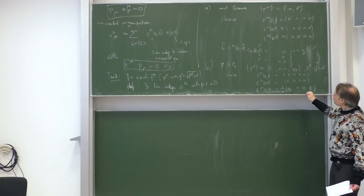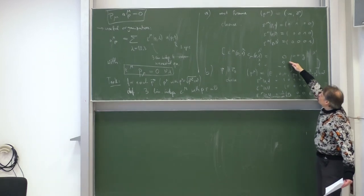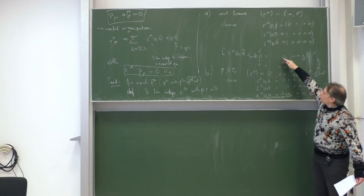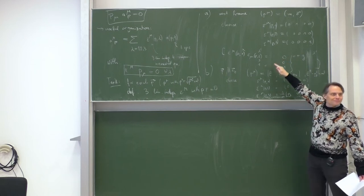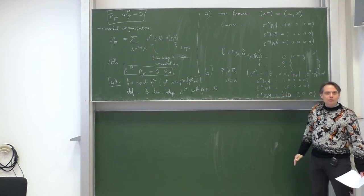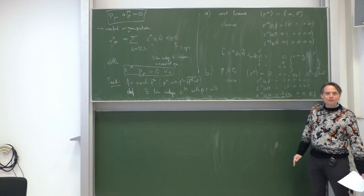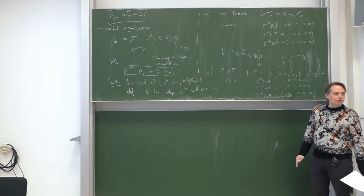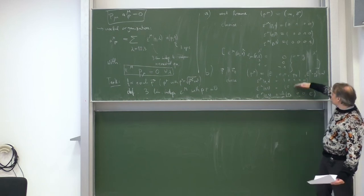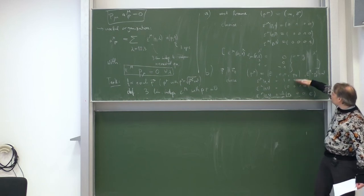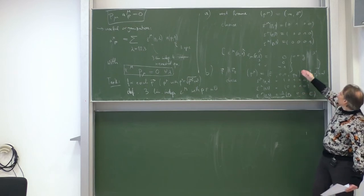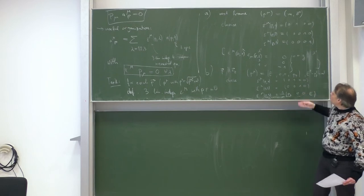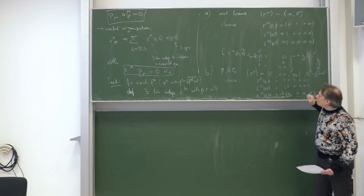Is the orthogonality equation still valid? Obviously yes — the vectors are constructed to be orthogonal and they are also normalized, so the relation epsilon-mu of p-lambda times epsilon-mu of p-lambda-prime equals G-lambda-lambda-prime remains valid in this case as well.